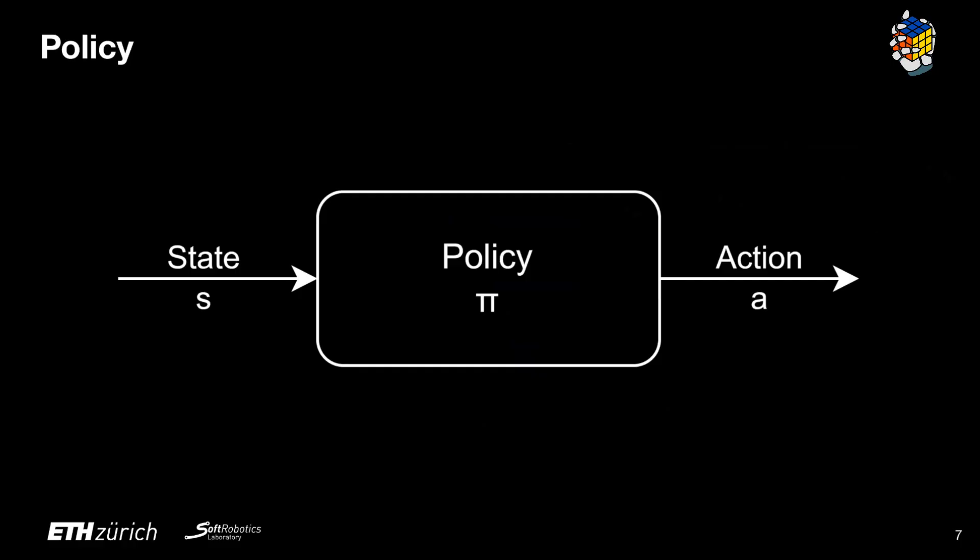After introducing the structure with which the robot interacts with the environment, we need to also present the concept of policy. The policy is our learned controller. It's a function of the agent state s and it outputs the ideally optimal action that the agent should perform to maximize the reward.